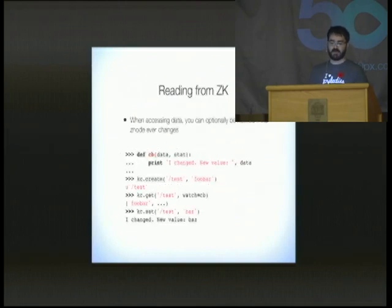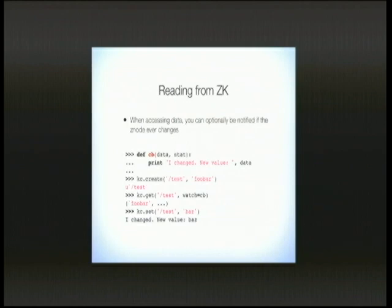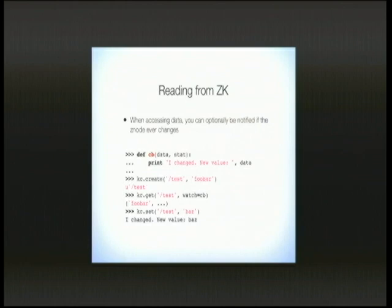You can also optionally be notified if the value of a Z node ever changes. What we're doing first is setting up a callback that gets the data of the node that changes and something called stat. ZK is the name of our ZooKeeper client. We call zookeeper.create to create a node under /test with the value 'foobar'. Then we call get('/test') and pass the callback in as a watch parameter. That returns the current value, which is 'foobar'. And then if we ever set that value to 'baz', you can see the callback is invoked — it says 'I changed, new value baz'.